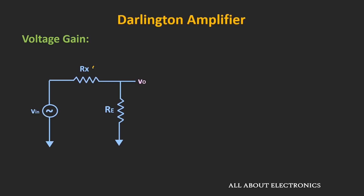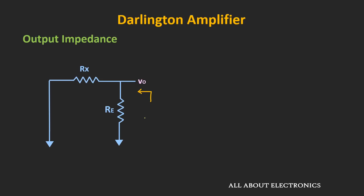Using this equivalent circuit, we can find the output impedance of this Darlington amplifier. The output impedance is the equivalent impedance seen from the output terminal. To find it, we consider the input voltage source as zero. Then these two resistors are in parallel, so the output impedance is the parallel combination of Rx and Re, which is approximately 1/gm2 in parallel with Re. Since 1/gm2 is much less than Re, the output impedance is approximately equal to 1/gm2.